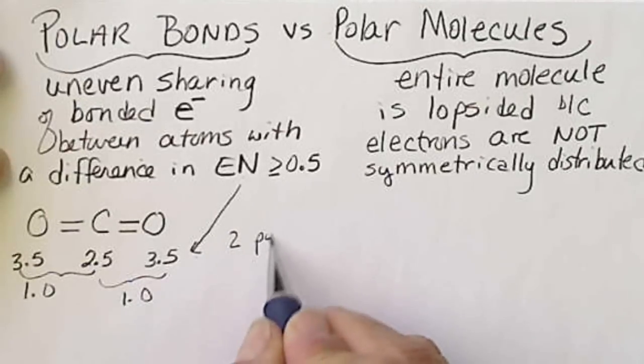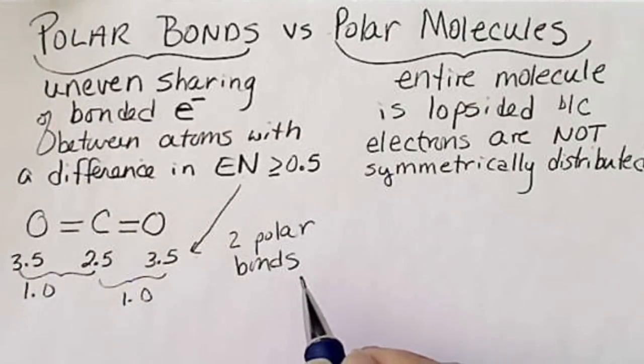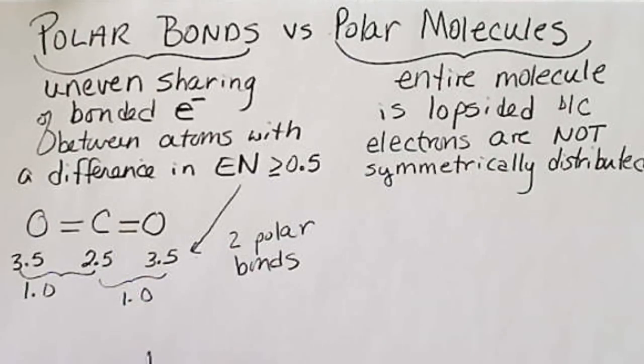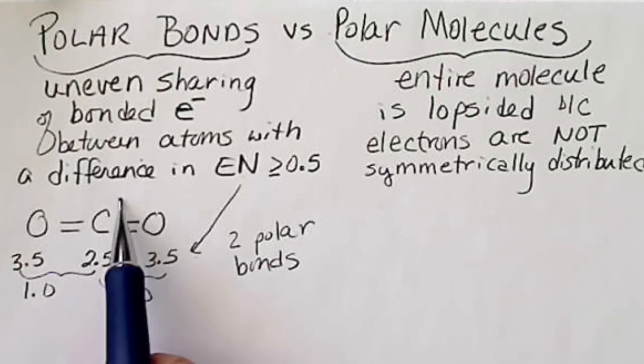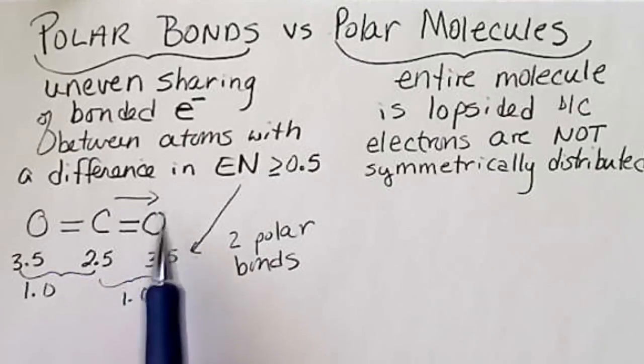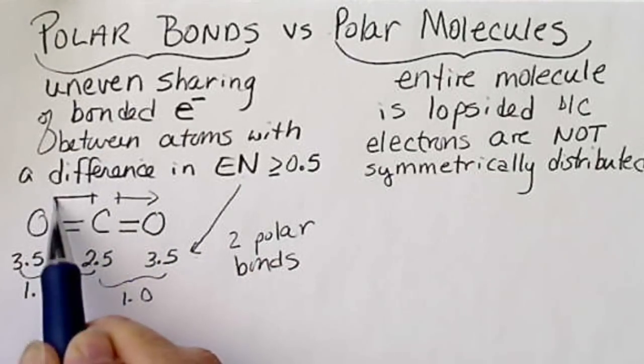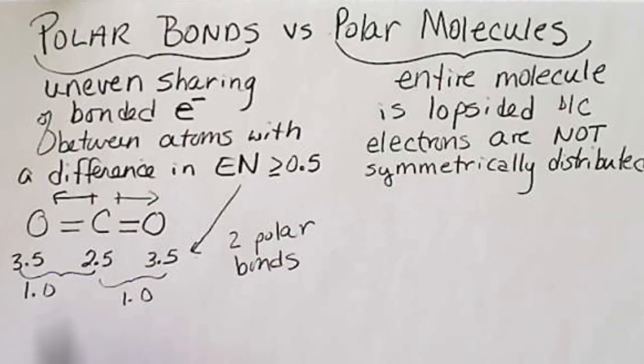CO2 has two polar bonds, but because the molecule is perfectly symmetrical, the electrons are pulled in this direction by this oxygen, and they're also pulled in the exact opposite direction by this oxygen.